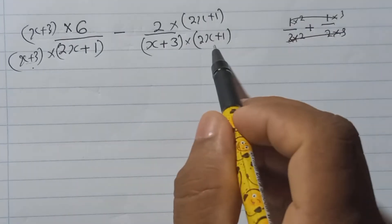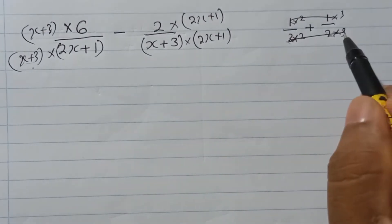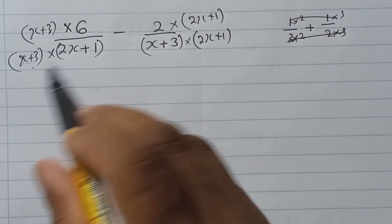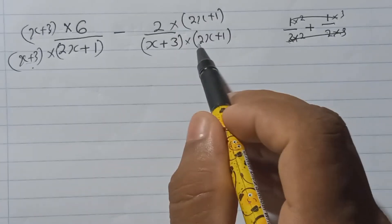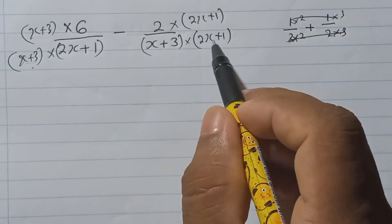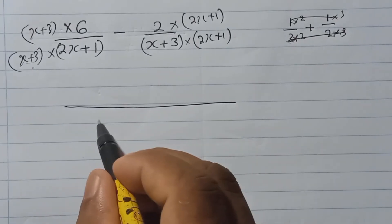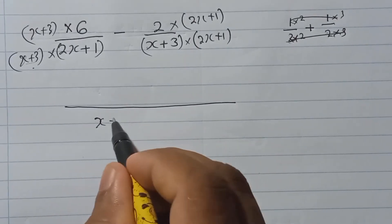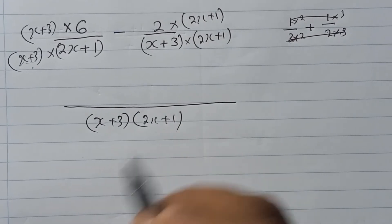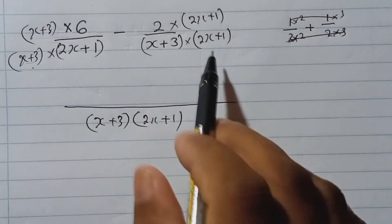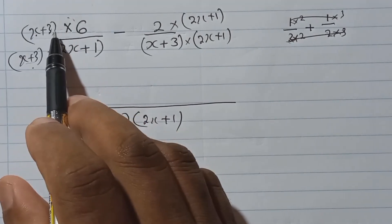Now here and here we have the same denominator. You can see: 3 into 2, 2 into 3 — like that. Here also we have the same denominator: x plus 3 into 2x plus 1, and here also x plus 3 into 2x plus 1. So I just need to write that one denominator: x plus 3 and 2x plus 1.